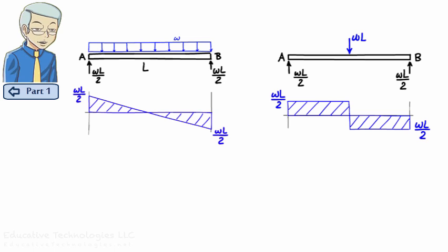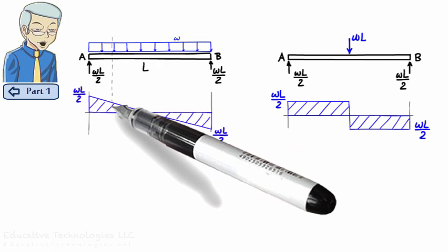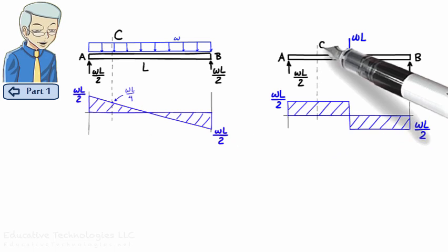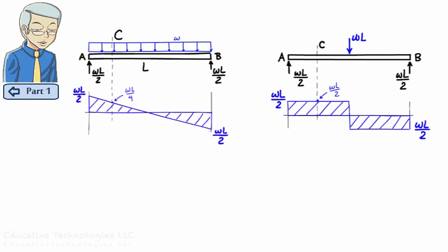Observe that shear in the right beam is generally larger than shear in the left beam. For example, at point C, the left diagram gives a shear value of WL over 4. However, the right diagram gives a shear value WL over 2 for point C. This means that when we replace the distributed load with its equivalent concentrated load, we overestimate shear value in the beam.